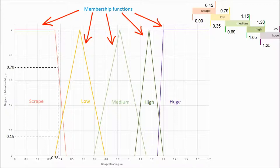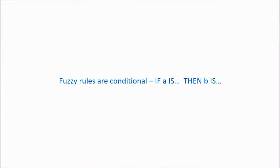Now we need a set of rules to determine the behavior of the system. Fuzzy rules are conditional. If one condition is satisfied, something happens. If another condition is satisfied, something else happens. Based on the membership degree, each rule may be fully, partially, or unsatisfied.